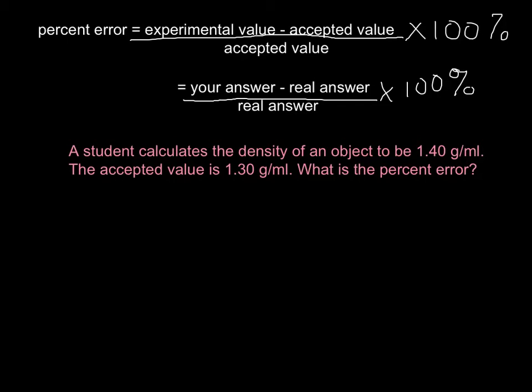Instead of me rewriting the whole formula, which is good practice, we're going to use this formula and plug in the numbers. So our percent error is going to be equal to the experimental value, which is right here, 1.40.